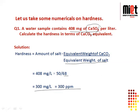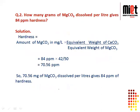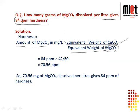Second numerical: how many grams of magnesium carbonate dissolved per liter gives 84 ppm hardness? Use the formula: mass of hardness-producing substance equals hardness multiplied by equivalent weight of magnesium carbonate divided by equivalent weight of calcium carbonate, which is 50, and equivalent weight of magnesium carbonate is 42. The answer is 70.56 mg of magnesium carbonate per liter, which equals 70.56 ppm.